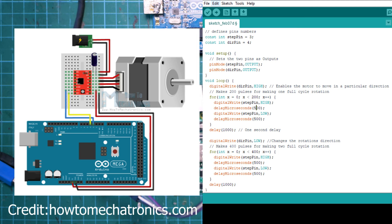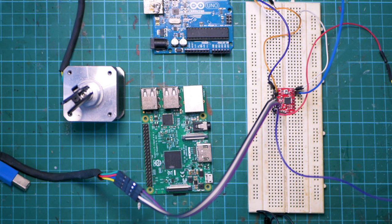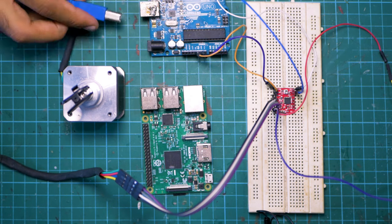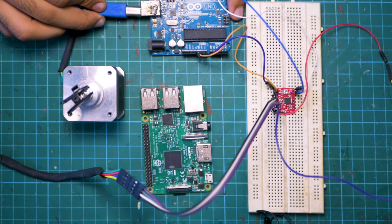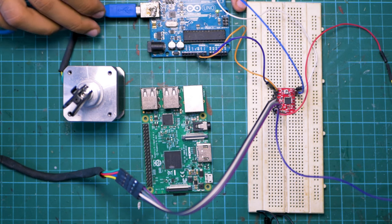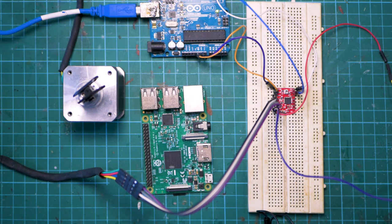This is the circuit that I've used, and this is the code that I've used. The code I've written here is for the Arduino, but the code can be compiled for the Raspberry Pi as well, and it'll work in the same way. As you can see, the stepper motor spins.